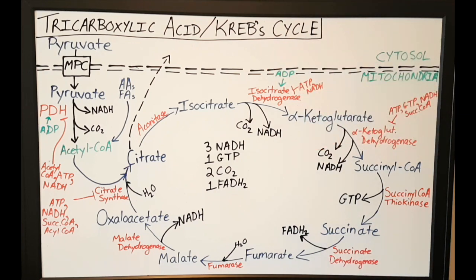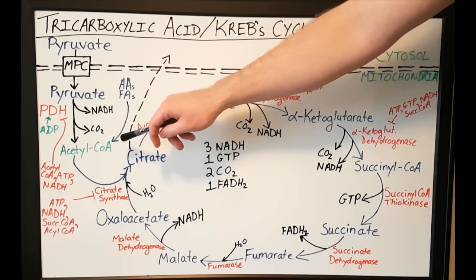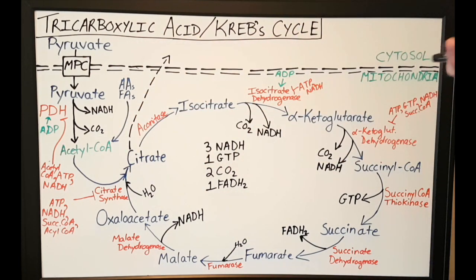Acetyl-CoA is a very important molecule. It's really just an acetyl group attached to a CoA, a coenzyme A moiety, via a high-energy thioester bond. I just want to point out that pyruvate is not the only way you can get acetyl-CoA. You can get acetyl-CoA via the other two large substrate groups, such as amino acids and fatty acids.